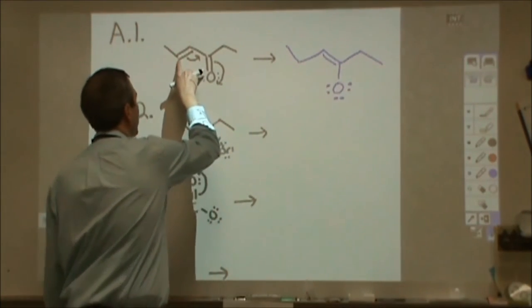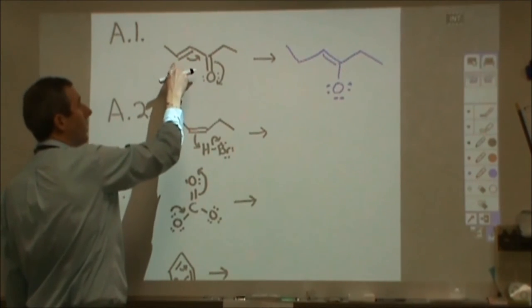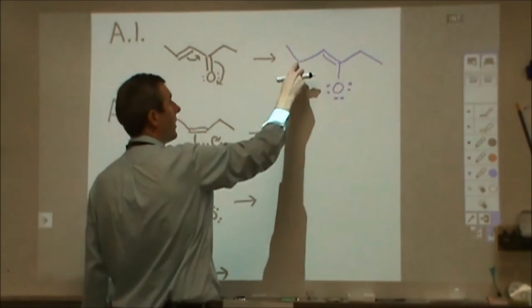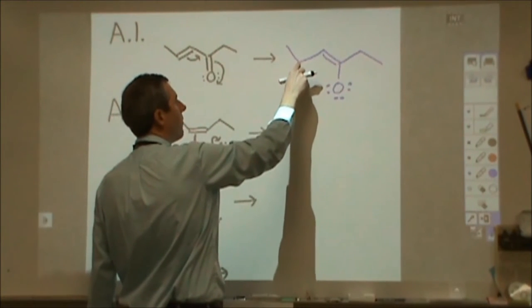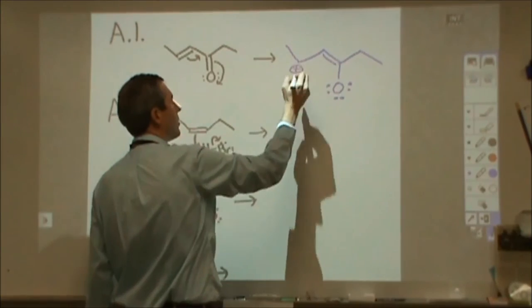For example, this carbon here starts with one, two, three things bonded to it, so it has one hydrogen. It's not changing the amount of things attached. So here I still only have one hydrogen, but now I only have two things attached. This now has a positive charge—that's a carbocation.